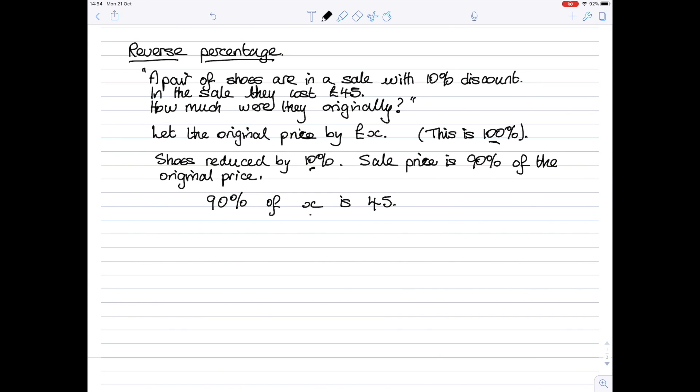x is the original price, that's 100%. They're reduced by 10%, so they're 90% of what they were worth, and the 90% is 45. This line here is a sentence written with words: 90% of x is £45. Now I'm going to write it as a sum. So 90% as a decimal is 0.9. In other words, 0.9x equals 45. This sentence is exactly the same as the line above, except it's in mathematical terms and the line above is in words.